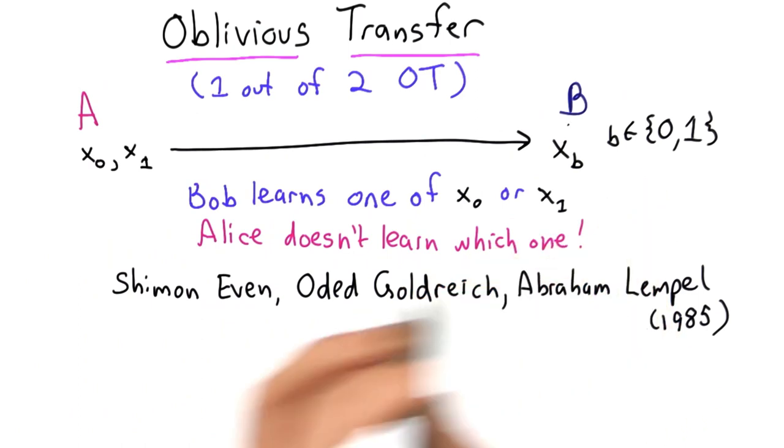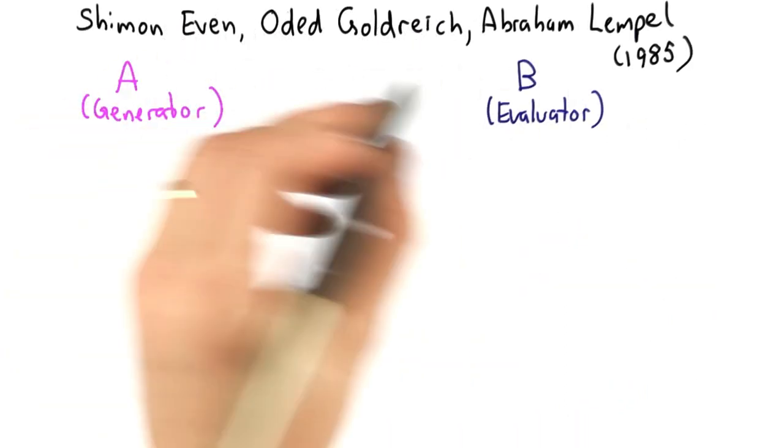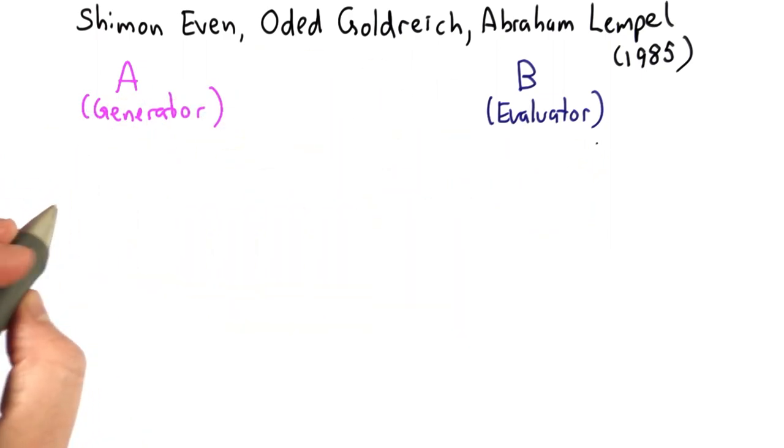There are lots of different protocols that provide this. The one I'm going to describe was invented by Even, Goldreich, and Lempel in 1985. It builds on RSA encryption, and we're going to look at it as we need to use it in the garbled circuit protocol.